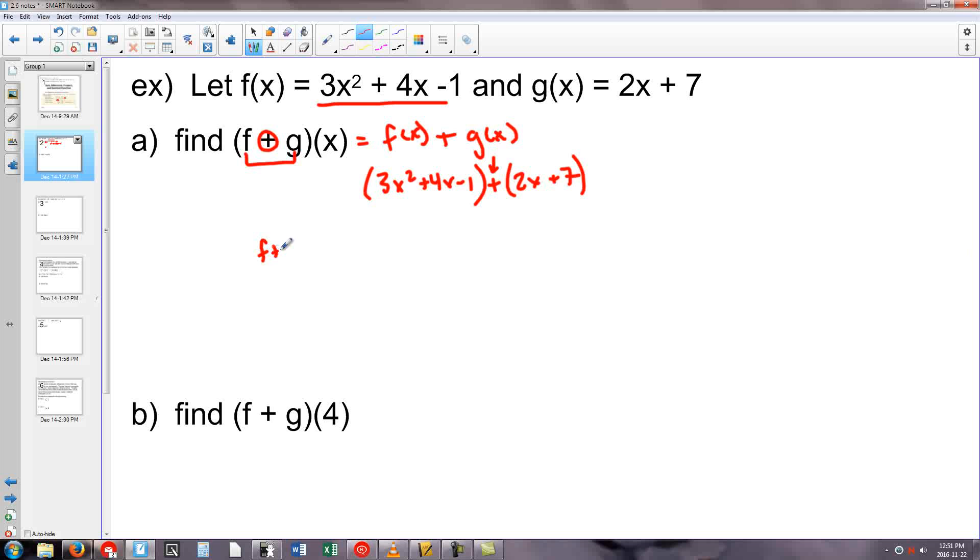We're going to combine our like terms. So f plus g of x will equal 3x squared plus 6x - that's 4x and 2x - a minus 1 and a plus 7 is plus 6. This is our new function. We've added the two and created a new equation.